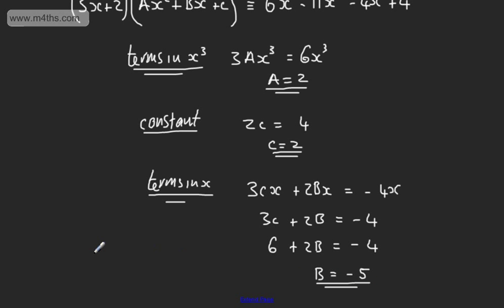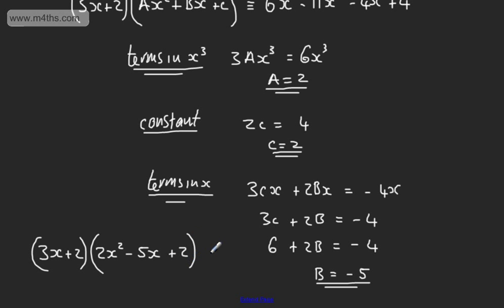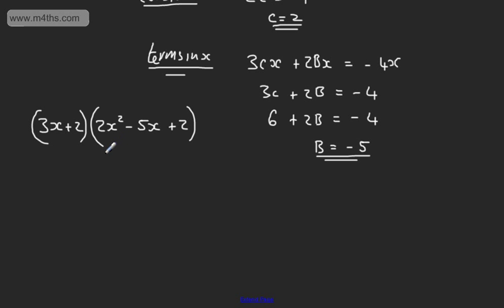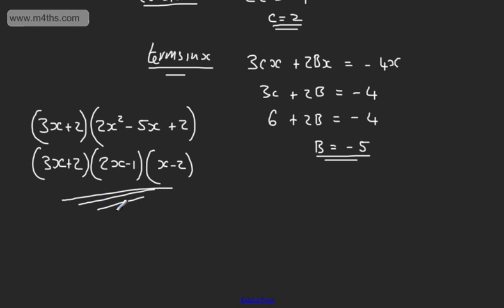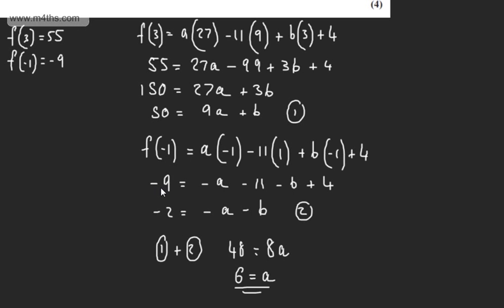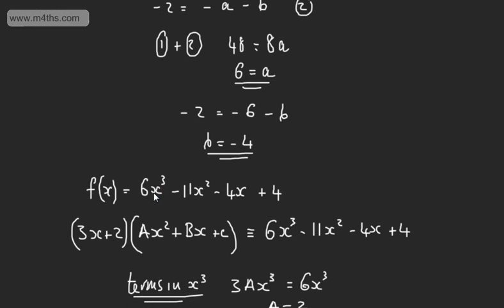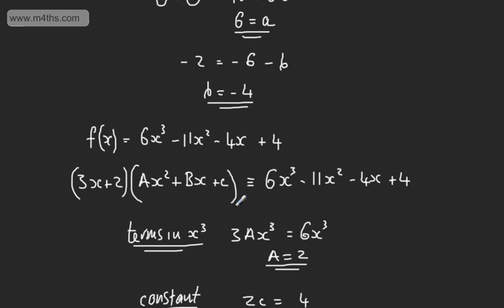So we can write this as 3x plus 2 multiplied by 2x squared minus 5x plus 2. Now we factorise this quadratic, which gives us 2x minus 1 multiplied by x minus 2. So f of x fully factorises as 3x plus 2 multiplied by 2x minus 1 multiplied by x minus 2. That's 9 marks in total, and there are different approaches you could take — for example, polynomial long division.